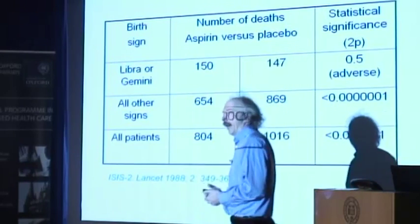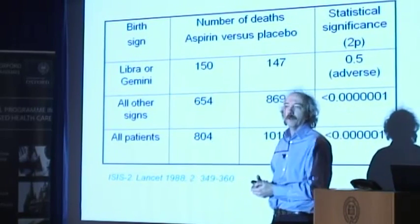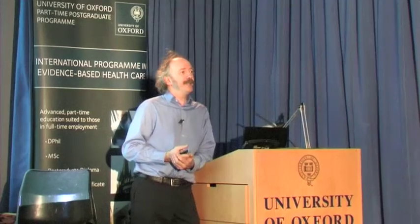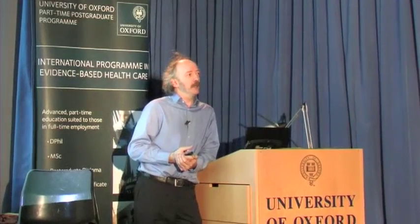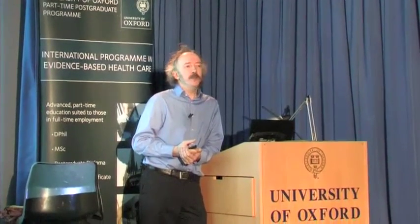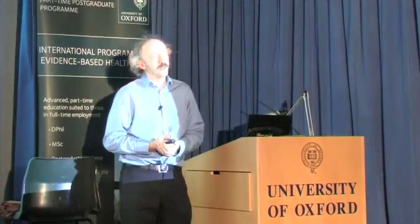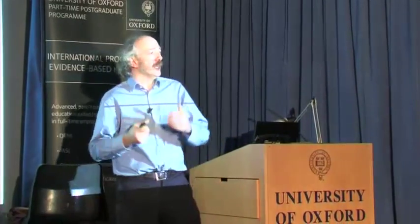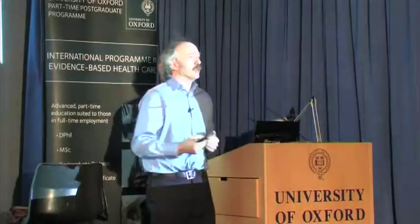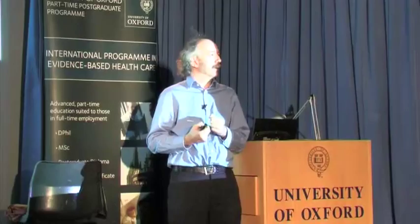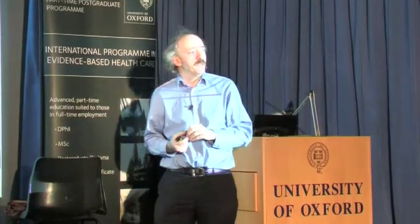Would they say, I don't want an aspirin, thank you very much, because that doesn't work for me? This is the real result of ISIS-2: Libra and Gemini do not benefit from aspirin. Do you believe it? How many subgroup analyses do you think they did? Do you think there's a biological rationale for Libra or Gemini? No, there isn't.